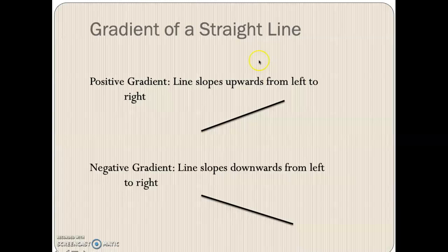Gradient of a straight line. When we read, just like we're reading these words, we read from left to right. That's the same way how we read our graphs. So a positive gradient is a line that slopes upwards from left to right. A negative gradient is a gradient that slopes downwards from left to right. So this is like we're climbing uphill, positive gradient, and here we're going downhill, negative gradient.